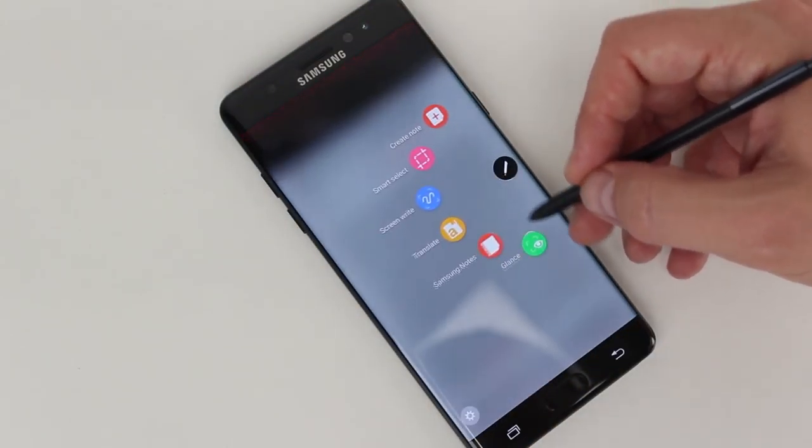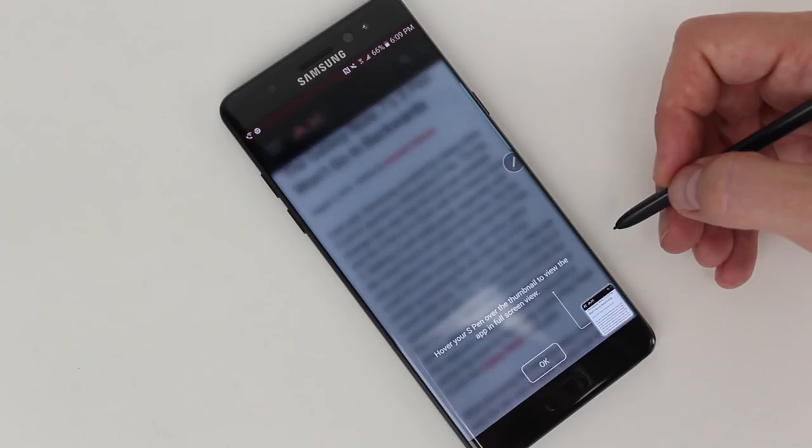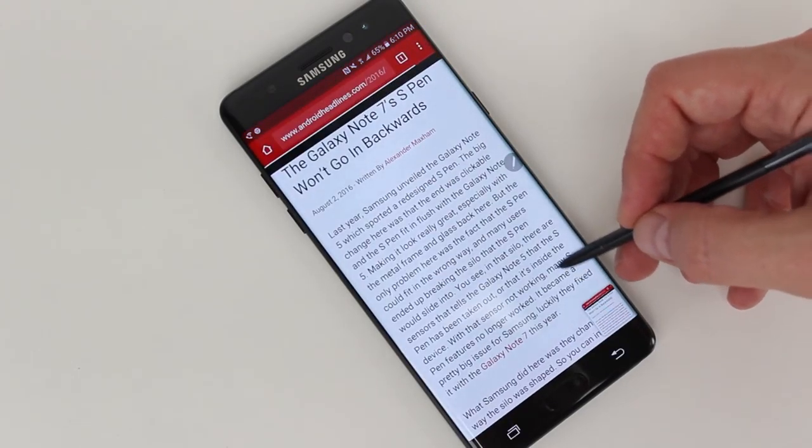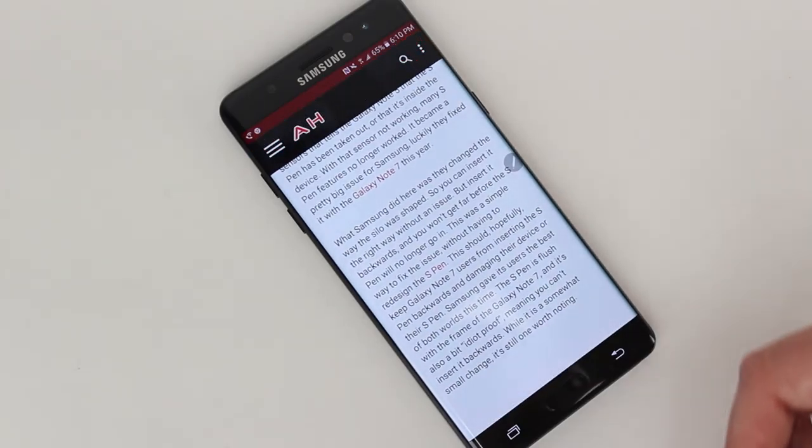There's also another feature called Glance that allows you to effectively minimize an app and then pull it up just temporarily by hovering your pen over the app, scrolling through it, and then as you bring it away it'll minimize again so you can use the other app in the foreground.